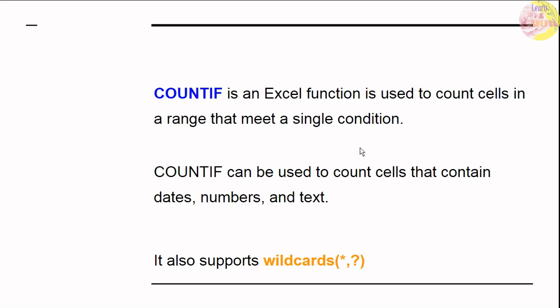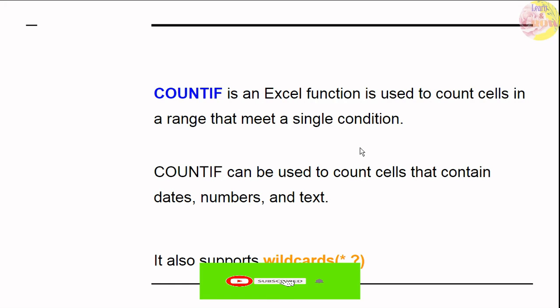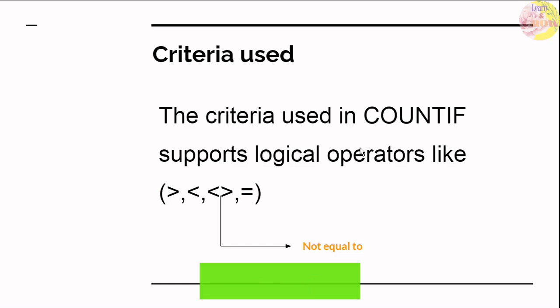The COUNTIF function is an Excel function used to count the number of cells in a range that meet a single condition or criteria. The COUNTIF function can be used on numbers, dates, and text as well. It also supports wildcards. The criteria can use logical operators such as greater than, less than, not equal to, and equal to.